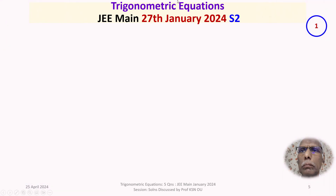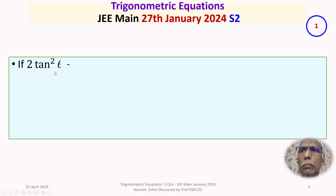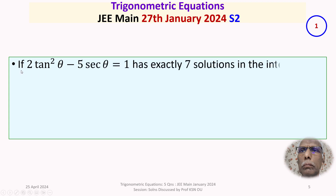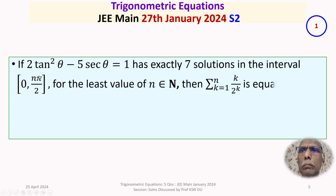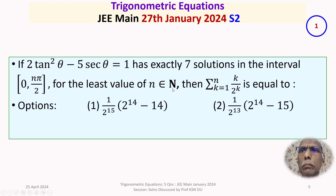The first question has appeared in the JEE Main held on 27th January 2024 in the second shift. The given question is: if 2tan²θ - 5secθ = 1 has exactly seven solutions in the closed interval [0, nπ/2] for the least value of n belonging to the set of natural numbers, then find Σ(k=1 to n) k/2^k.